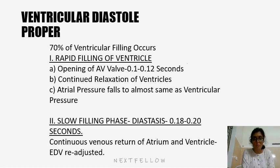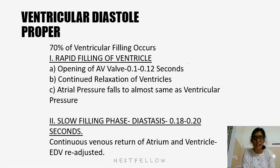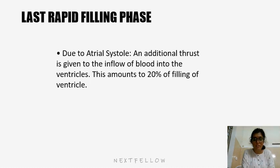Ventricular diastole proper: 70% of ventricular filling occurs with rapid filling of the ventricle upon opening of the AV valve, lasting 0.1 to 0.12 seconds, with continued relaxation of the ventricles. Atrial pressure falls to almost the same as ventricular pressure. In the slow filling phase, lasting around 0.18 to 0.20 seconds, continuous venous return fills the atria and ventricles, and end-diastolic volume is adjusted. A last rapid filling phase occurs due to atrial systole, giving an additional thrust to blood inflow into the ventricles, accounting for 20% of ventricular filling.